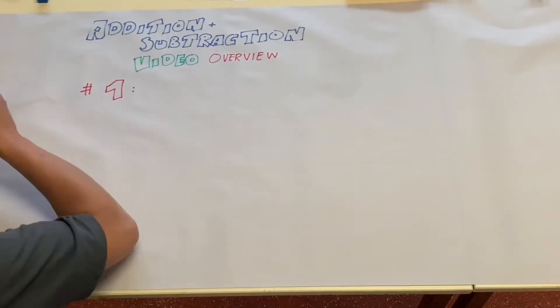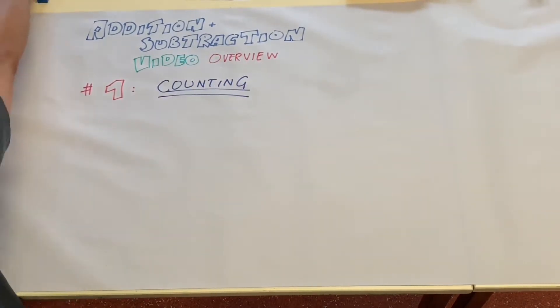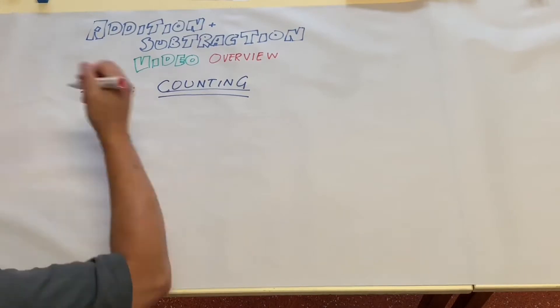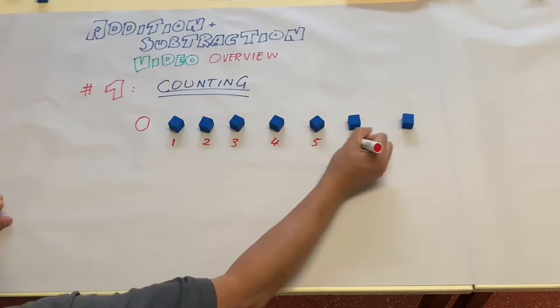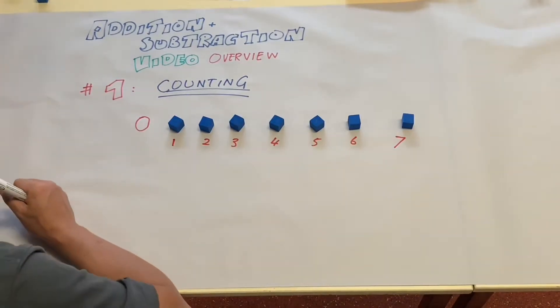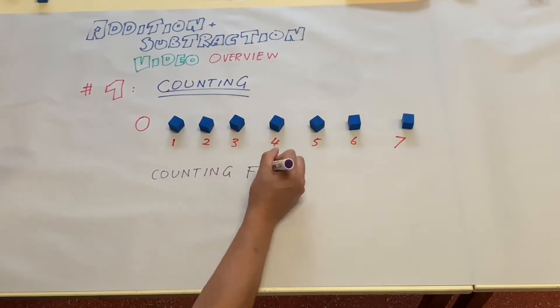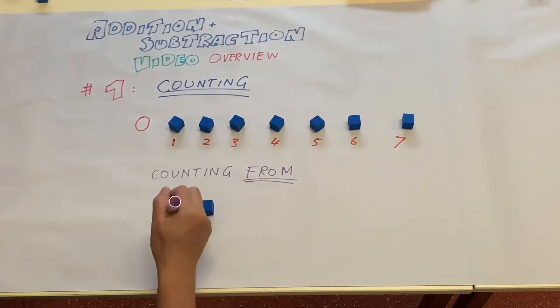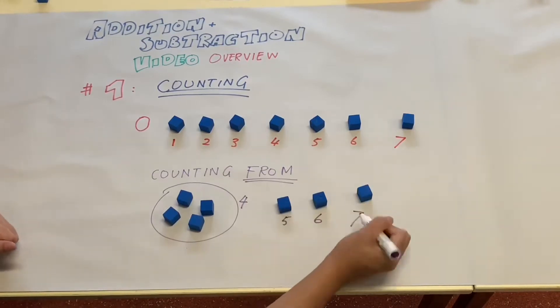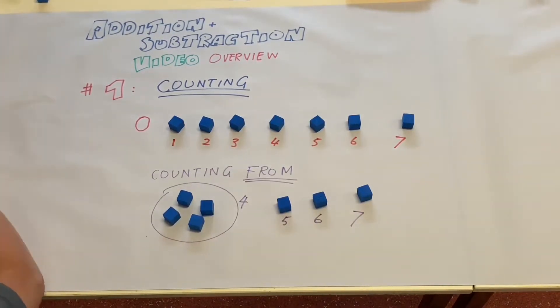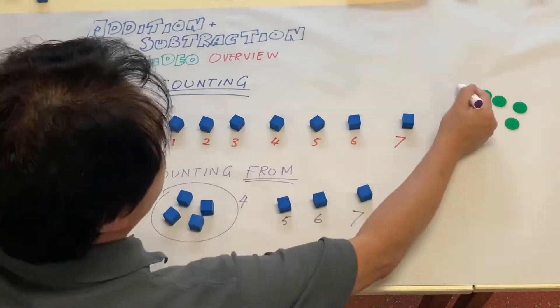Video number one is going to be purely for counting. A very important part of counting is to consciously use the zero, starting from zero you count one, two, three, four, five, six, seven. Counting up and also counting down is important. Another important part of counting is counting from, for example, from number four you count up five, six, seven.